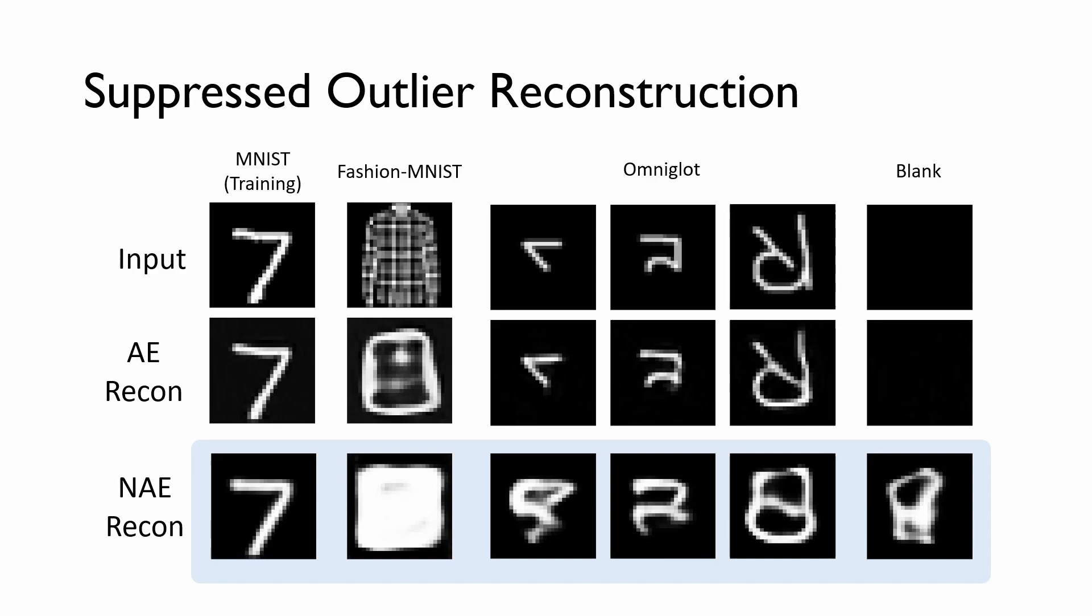With the new objective function, NAE is significantly less prone to reconstruct outliers, becoming a strong outlier detector.